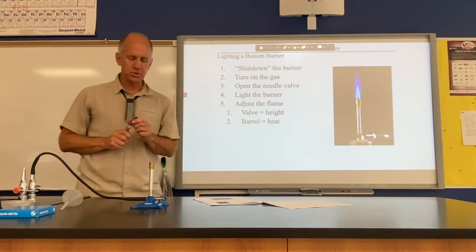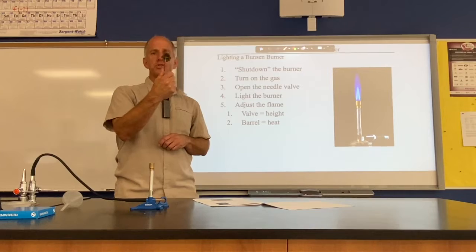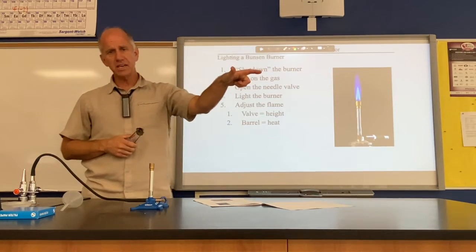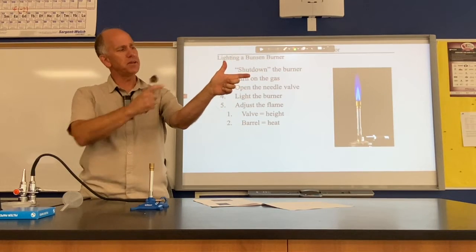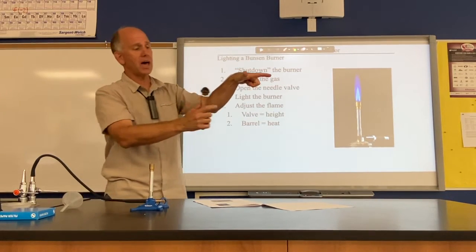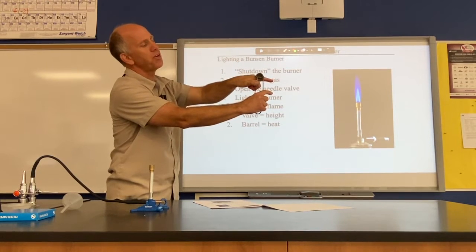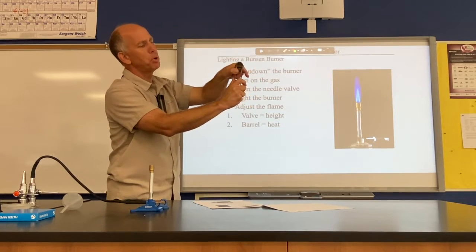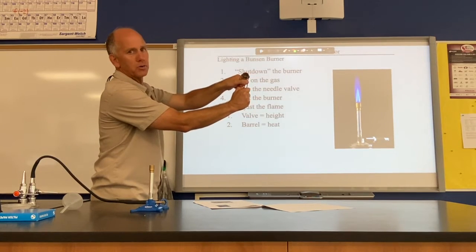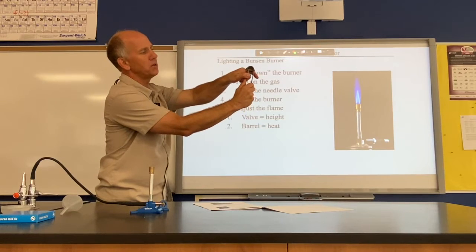We do not use matches to light the burners because that leaves matches in the trash, which causes problems. We use a striker. Here's how to do this properly — and this really matters. Take your left hand and extend your pointer finger and thumb up in the air like a gun, then flip it on its side. Rest the hood of the striker against the barrel of your hand, hook your thumb over the leg of the striker, and push hard enough that it leaves a dent on your thumb. Then squeeze and it makes sparks. If you don't do that correctly, you can squeeze it forever and it will never spark.